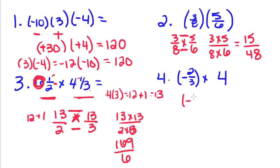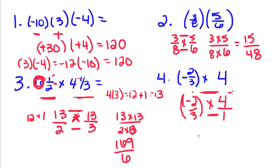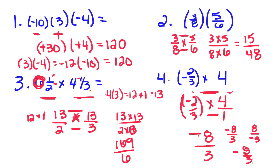For our last example, we have negative 2/3 multiplied by 4. Any number divided by 1 stays the same, so we write 4 as 4/1. That way we can multiply across the top and bottom. Since we have opposite signs multiplying, we know the result will be negative. We get 2 times 4, which is 8, over 3 times 1, which is 3. You can write this as negative 8 over 3, or 8 over negative 3, or just negative 8/3 — either way you end up with a negative number.